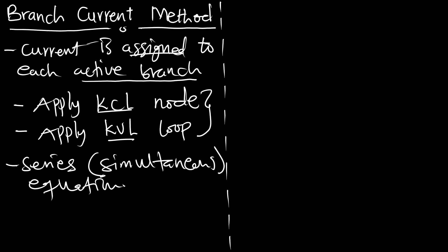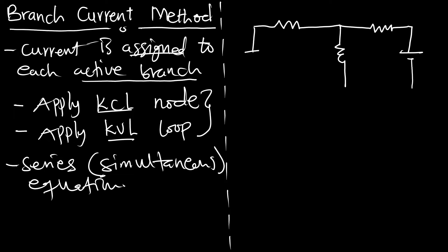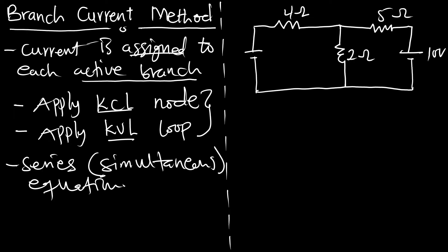Let's look at a diagram. We have a circuit with two voltage sources and resistors: 4 ohms, 5 ohms, 2 ohms, with voltages of 10 volts and 6 volts. We are going to find the currents in this circuit.